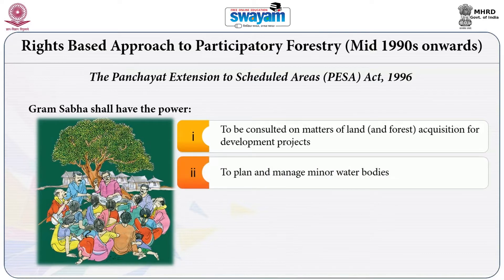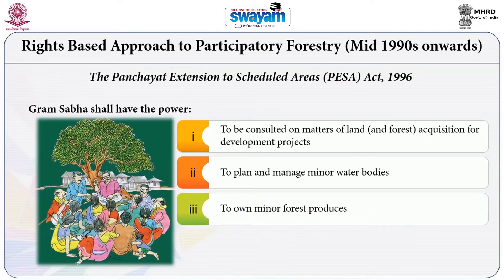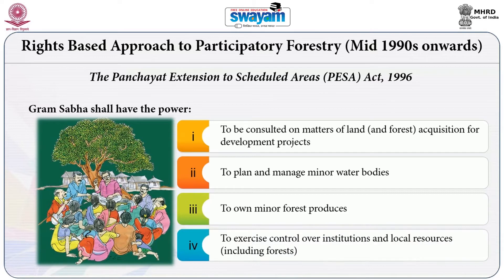The Gram Sabha is supposed to plan and manage minor local bodies, own minor forest products, and exercise control over the institution of local resource management. The PESA Act made elaborate provisions for including tribal communities, where the Gram Sabha would have the right to manage and control natural resources within the purview of the Gram Panchayat.